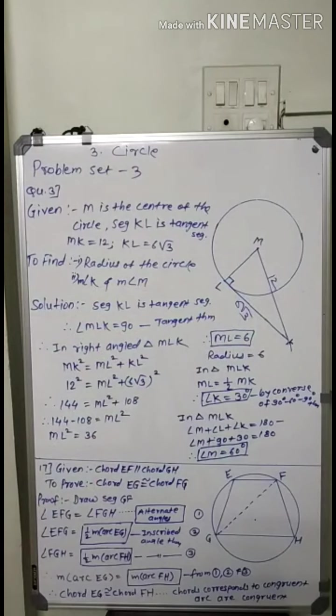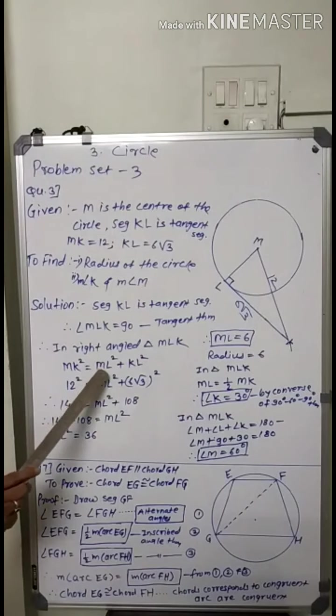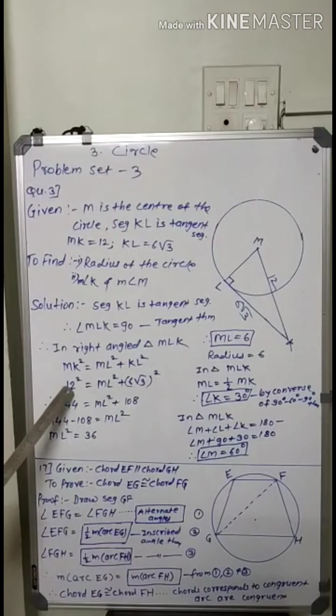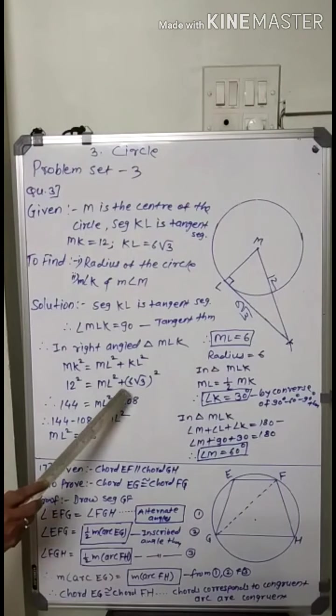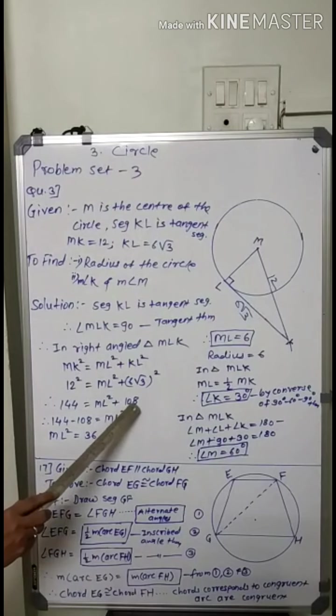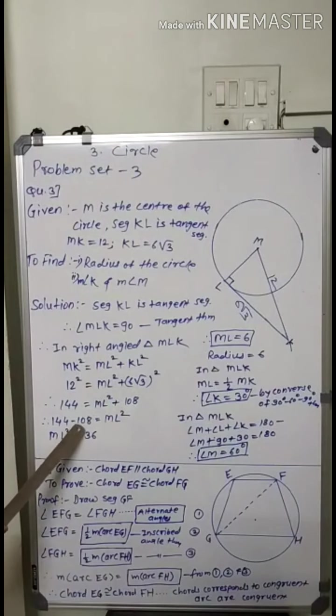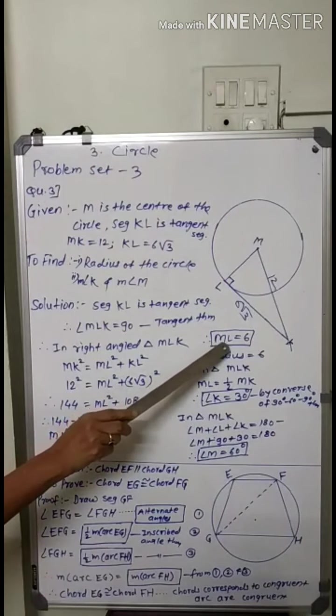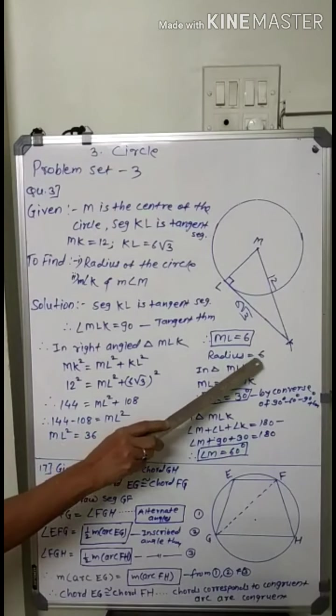In right angle triangle mlk, by Pythagorean theorem mk square equal to ml square plus kl square. See in the figure, value of mk is 12, so 12 square equal to ml square plus 6 root 3 square. 144 equal to ml square plus 36 times 3. 36 into 3 equal to 108, so ml square equal to 144 minus 108 equal to 36. Taking square root of both sides, ml equal to 6. Therefore first answer is radius of circle is 6 cm.